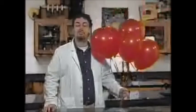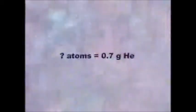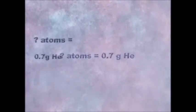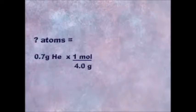That wasn't too hard. Let's try another one. How many atoms are in 0.7 grams of helium? Let's begin with: how many atoms are in 0.7 grams of helium? The molar mass of helium is 4.0 grams per mole. The units tell us to put the 4.0 grams on the bottom and 1 mole on top. The grams cancel.